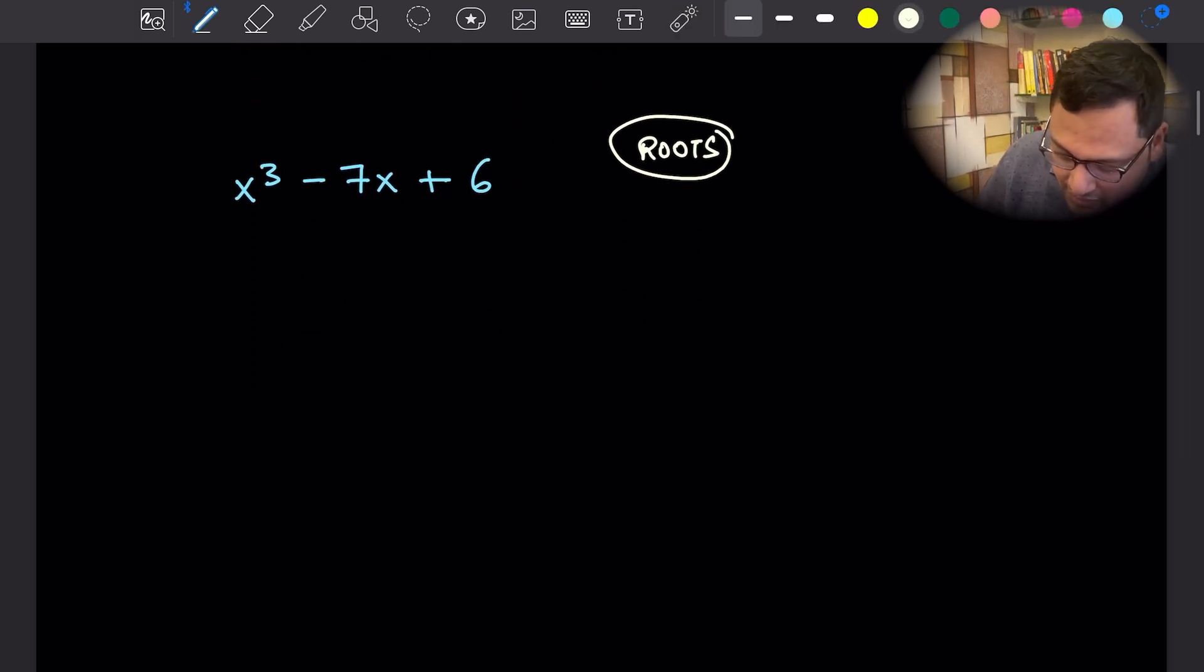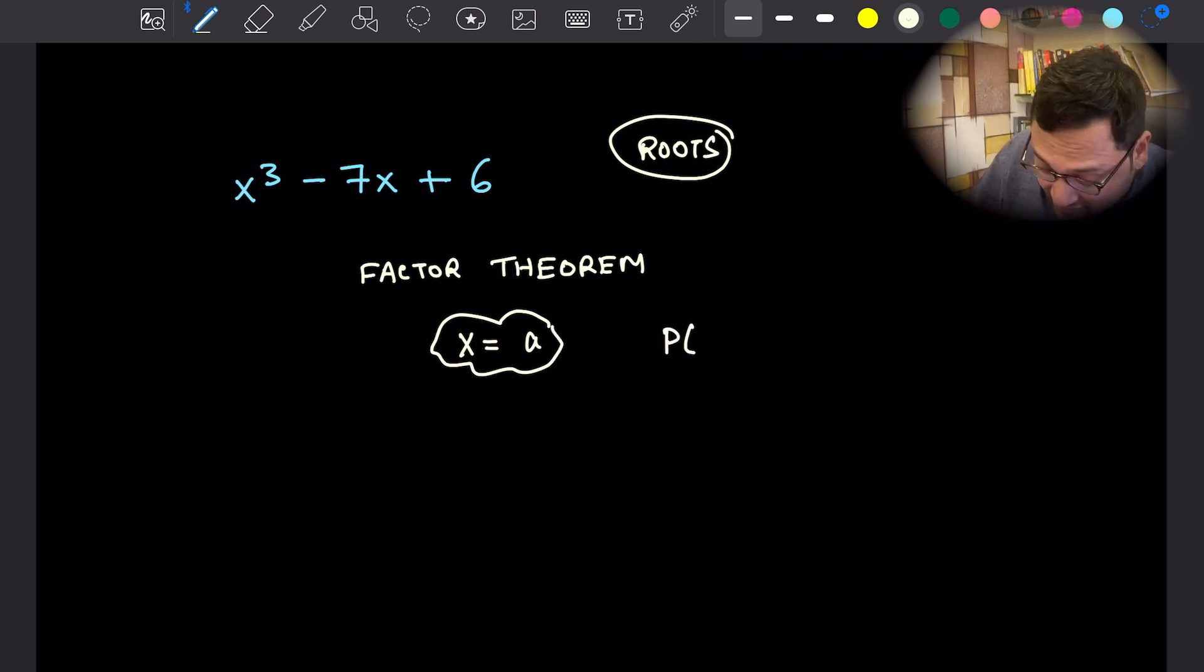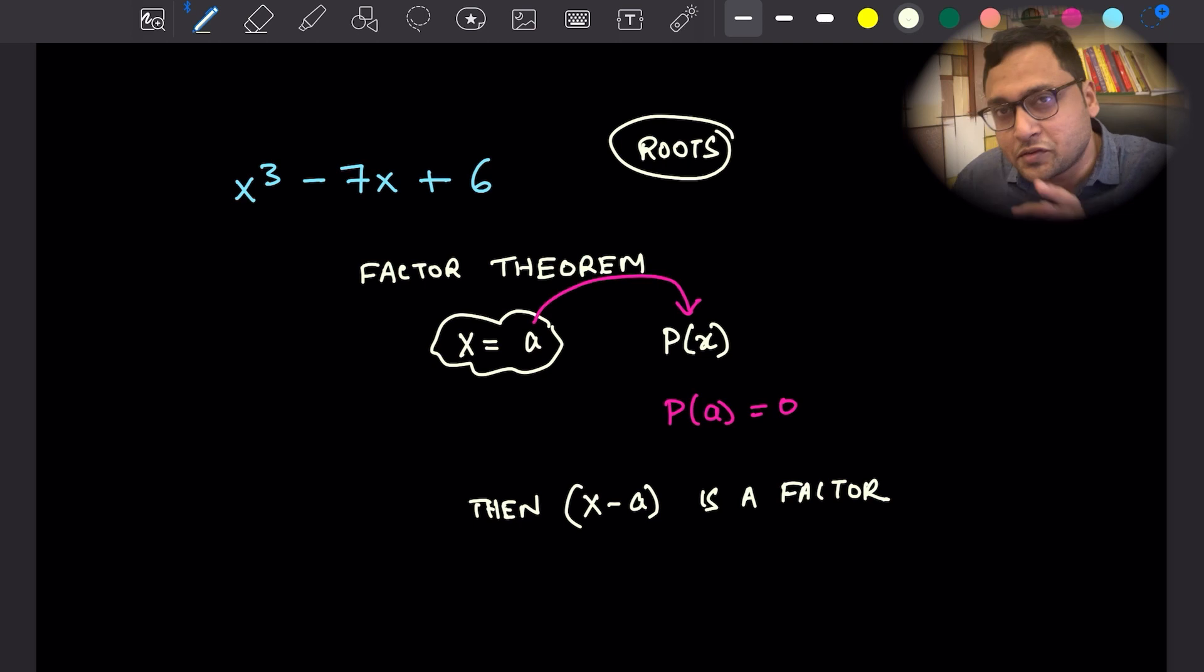How do we do that? The first thing we do is we use something called the factor theorem. What is the factor theorem? If you plug in x equals to some number, let's say a, in a particular polynomial p of x, if p of a becomes 0, then x minus a is a factor of the polynomial. You can write p of x as x minus a times something.